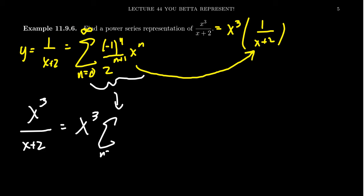The sum where n equals 0 to infinity of (-1)^n / 2^(n+1) times x^n.